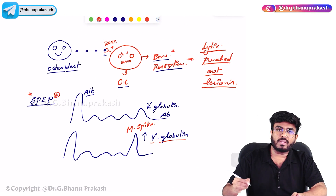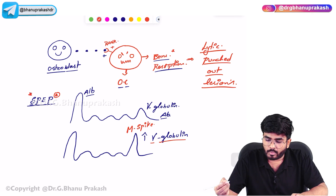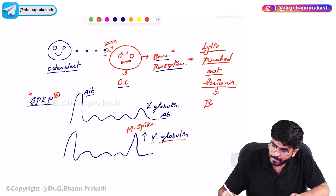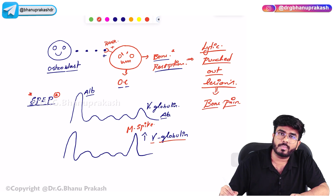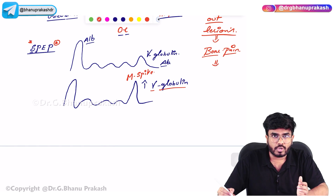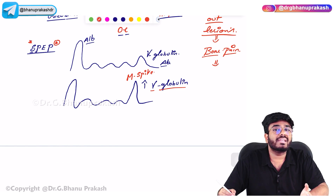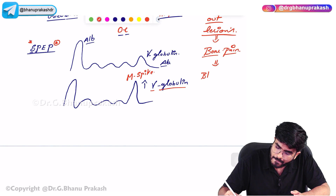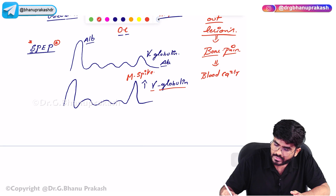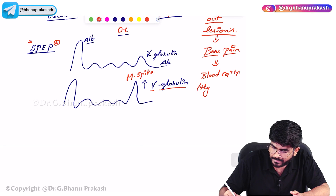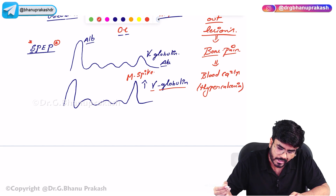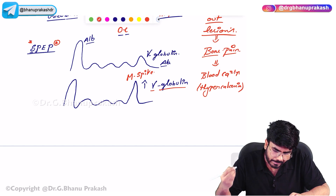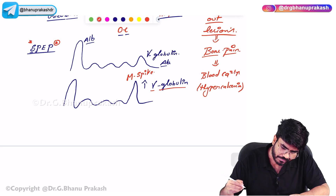The bones are mainly involved, with punched-out lytic bone lesions. The patient is going to have severe bone pain. Because of osteoclastic activity, the bones are getting resorbed. So the blood calcium levels become elevated — that is hypercalcemia. The patient with multiple myeloma will have hypercalcemia.